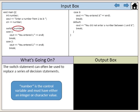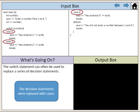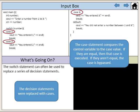Now we have replaced the series of decision statements with the switch statement. Number is the control variable and must have either an integer or character value. The switch statement compares the control variable to the case value. If they are equal, then that case is executed. If they aren't equal, the case is bypassed.